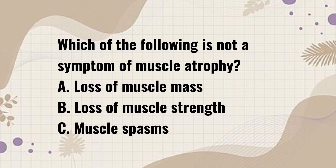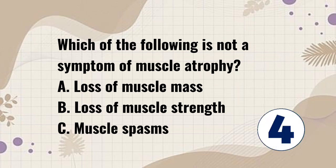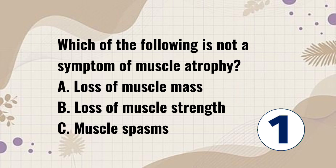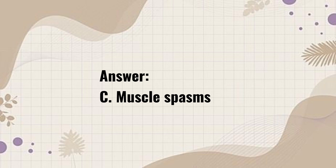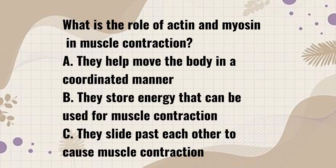Which of the following is not a symptom of muscle atrophy? A. Loss of muscle mass. B. Loss of muscle strength. C. Muscle spasms. Answer: C. Muscle spasms.